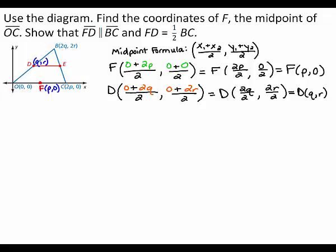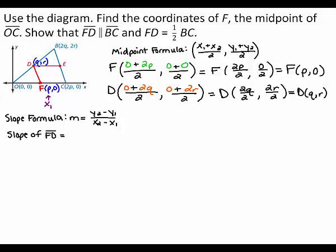Now, two segments are parallel if they have the same slope. So, to show that segment FD is parallel to segment BC, you need to show that they have the same slope. You can find the slope of each segment using the slope formula. To find the slope of segment FD, let x1 equal p, y1 equal 0, x2 equal q, and y2 equal r. You can substitute these values into the slope formula. When you simplify, r minus 0 gives you r in the numerator. So, the slope of segment FD is r divided by the quantity (q minus p).